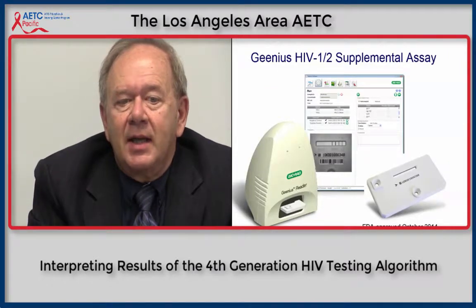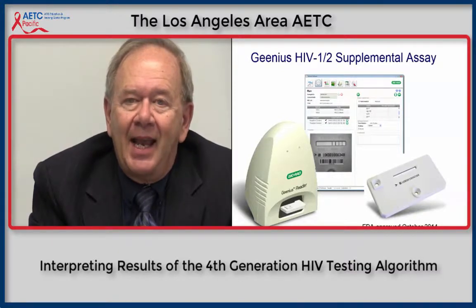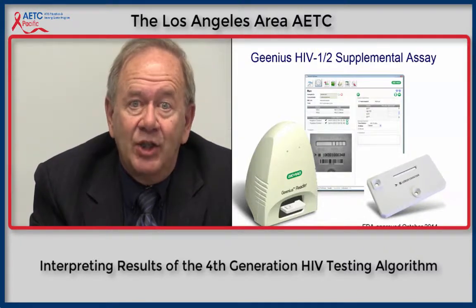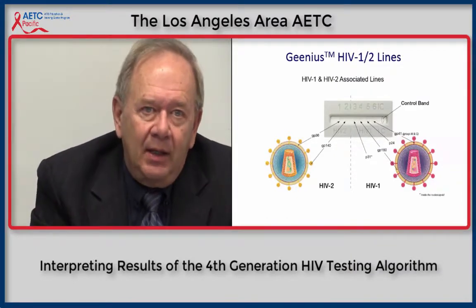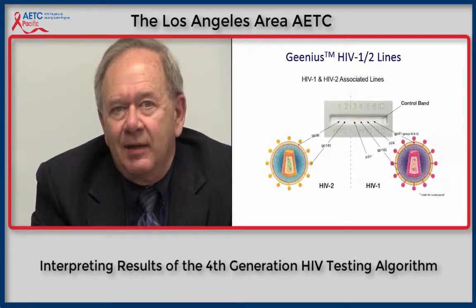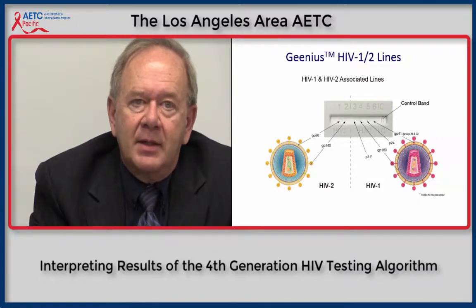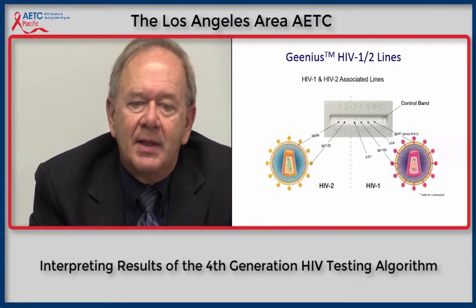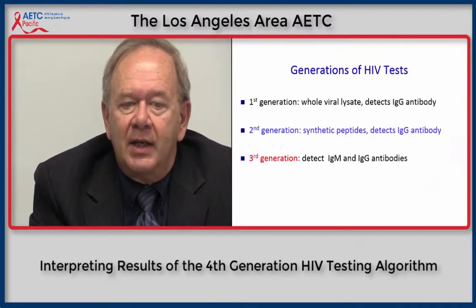The more recently approved Genios HIV-1/2 supplemental assay, approved by the FDA in October 2014, is again a second-generation assay. The antibody tests used as part of this algorithm following a fourth-generation initial assay are second-generation. The Genios assay has different peptides for HIV-1 and HIV-2: two bands — GP-36 and GP-140 — for HIV-2 detection, and four bands — P-31, GP-160, P-24, and GP-41 — for HIV-1 detection.